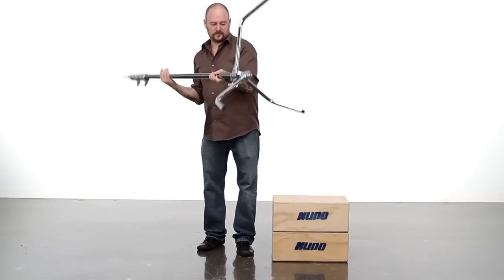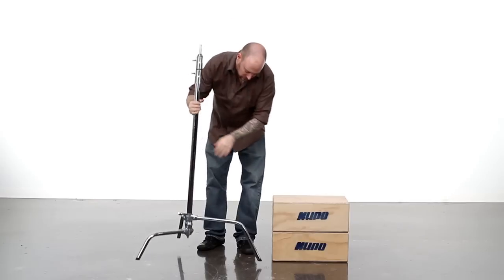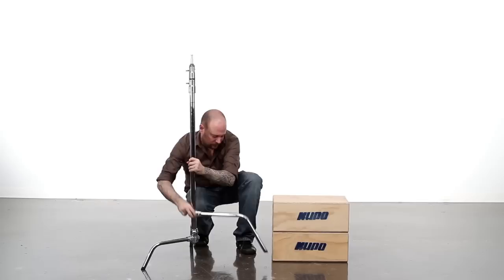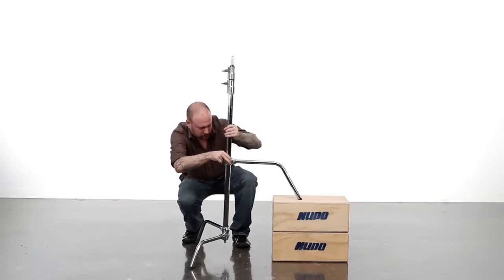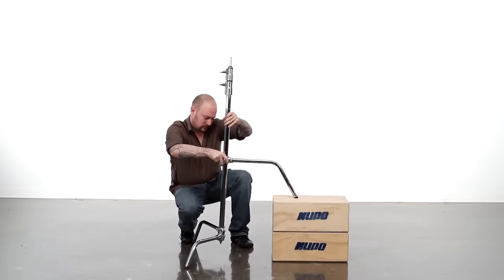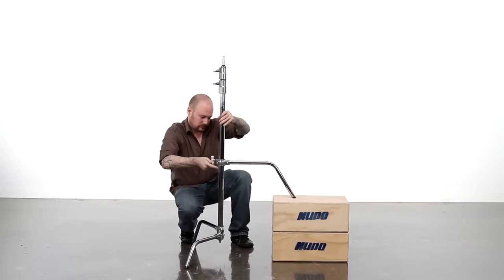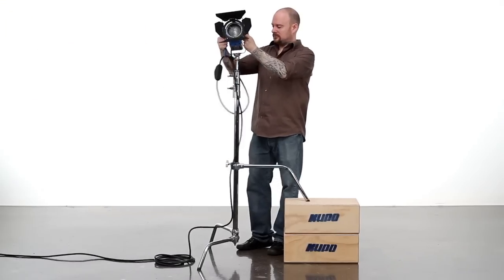Turn the stand over so the base is on the ground. Loosen the knob and adjust the height of the large leg until the riser section of the stand is upright. Then tighten the knob. Now you're ready to mount your light fixture.